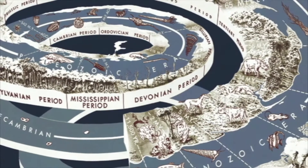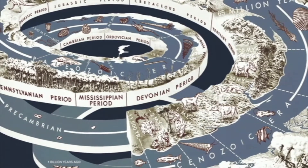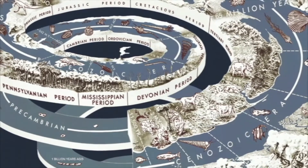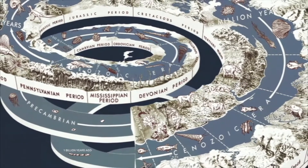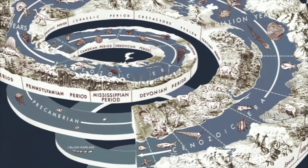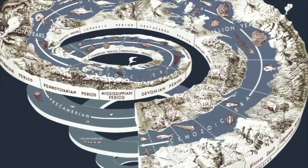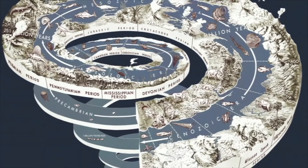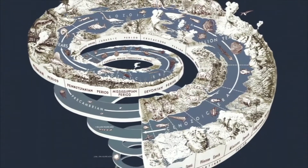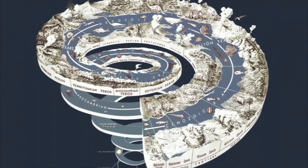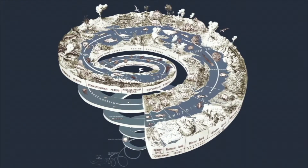Today, scientists are further refining evolutionary theory to explain complex organs in a wide range of organisms. It's important to understand that natural selection has had the long history of life on Earth, around 3.5 billion years to test a countless variety of structures. This vastness of time has allowed for the evolution of amazingly complex organs in millions of animal species.